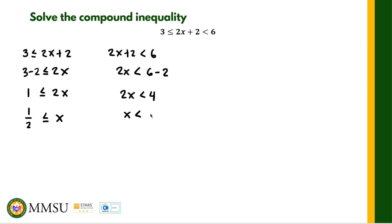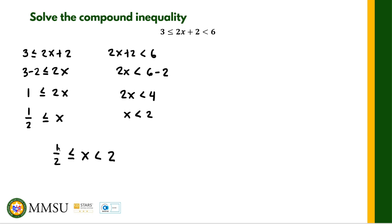Now that we have solved the two inequalities separately, we combine them into one single compound inequality. We have one half is less than or equal to x, and x is less than 2. So this is our solution using the first method.